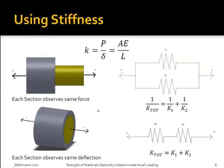In addition to using the superposition method, you can also take into consideration the stiffness of each section. By considering stiffness, you are essentially deriving something similar to an electrical circuit, except using springs.